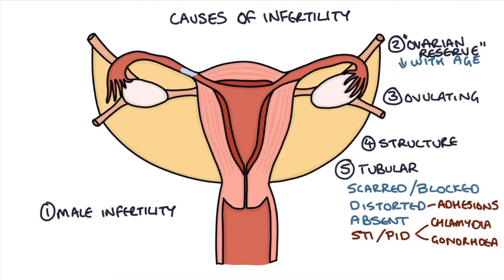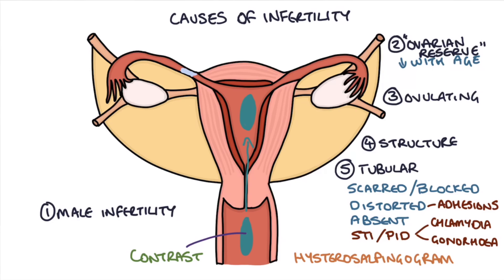The tubes are assessed using a hysterosalpingogram, where contrast dye is injected through the cervix to fill the uterus and spill into the tubes; an X-ray is then taken to show the outline of the uterus and tubes. If the tubes are patent the dye fills them; a blockage shows up as a gap. A similar assessment can be done during laparoscopy (keyhole surgery), where the surgeon directly observes whether dye fills the tubes. Importantly, chlamydia must be screened for before either procedure, as spreading dye through the uterus could spread an undetected infection.